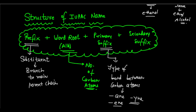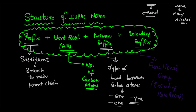And the secondary suffix tells us about the functional group attached, excluding the halo group. The halo group is the only functional group which comes before the name — it comes as a prefix, not as a secondary suffix. All other functional groups are added as a secondary suffix, and each functional group has a specific suffix to be attached. This is the basic structure of an IUPAC name.